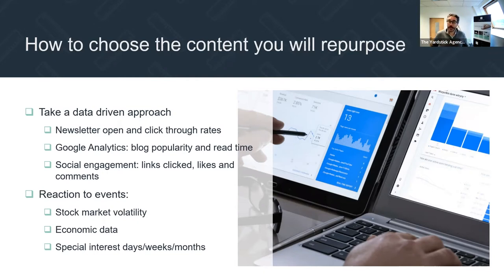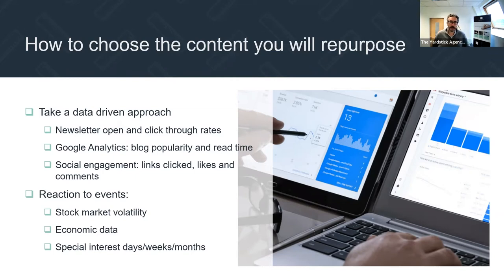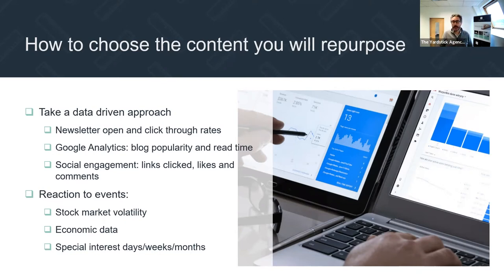Second source: Google Analytics. Go into the behavior tab, set the date range for the last nine or twelve months, and look down the list — it will show you the most popular pages on your website, including your blogs. It also shows average read time, so you can see which blogs are popular and getting good read times. That, along with newsletter open rates, helps you understand which are the most popular types of content — and those are the ones you should be repurposing.